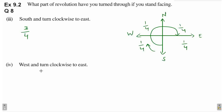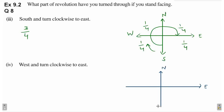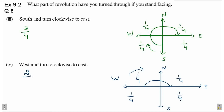Fourth part hai west and turn clockwise to east. Yahan par aise directions bana lo — north, east, south and west. Currently west facing hai. West facing se clockwise direction mein jaana hai east tak. Every part is one by four of complete revolution. And yahan par kitne parts cover ho rahe hain? One part and two part. So answer kya aa jaayega? Two by four — ab isko solve kar lo. So this will be one by two. Your answer is one by two.